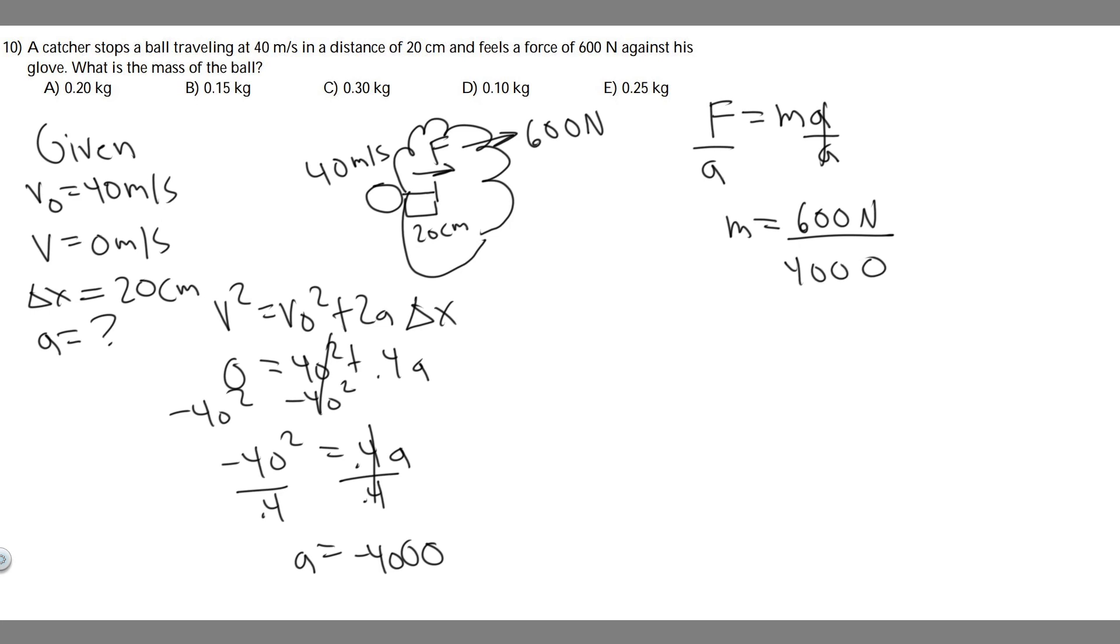So plug that in. 600 divided by 4000, if you do that you're going to get m equals 0.15. Keep in mind the units: when this is in meters per second squared and this is in newtons, your mass is in kilograms.